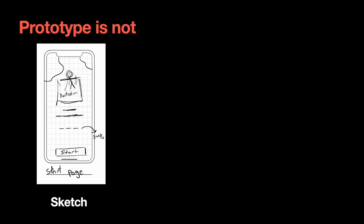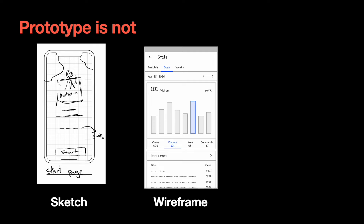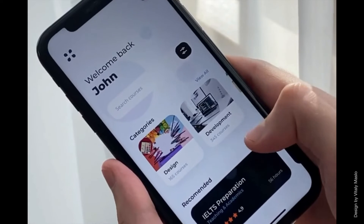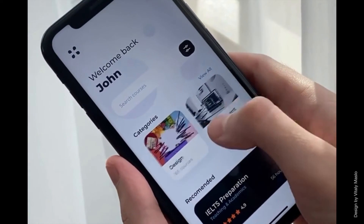The term prototype is used in different contexts, so it can be difficult to understand what it really is. First, let's discuss what a prototype is not. A prototype is not a sketch, wireframe, or mock-up. These three digital artifacts are static, while prototypes, on the other hand, are always interactive. Prototypes are a simulation of how the future product will work — they allow people to interact with the design.